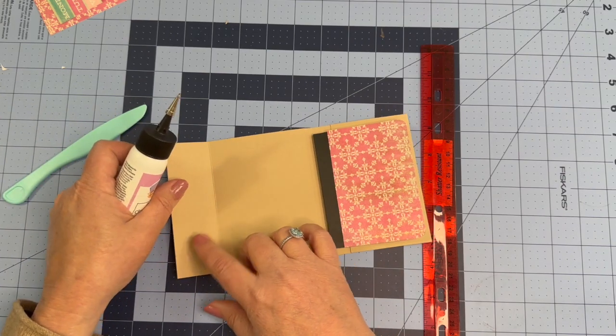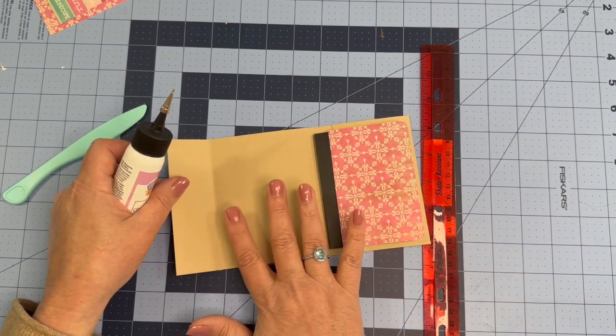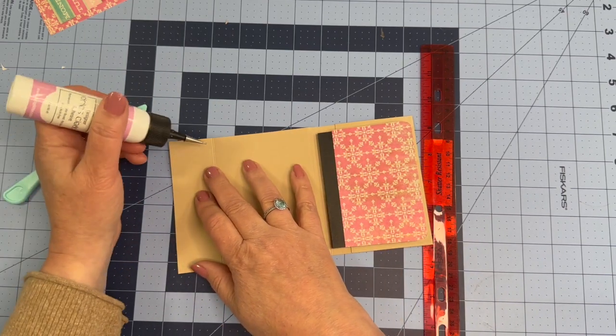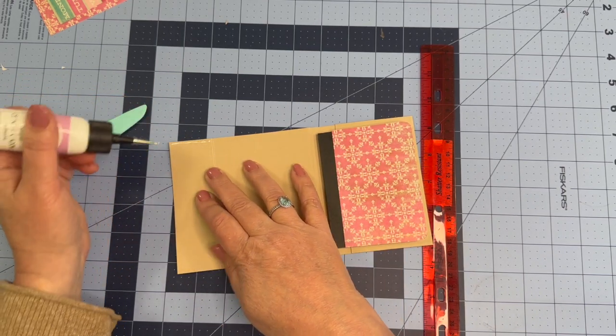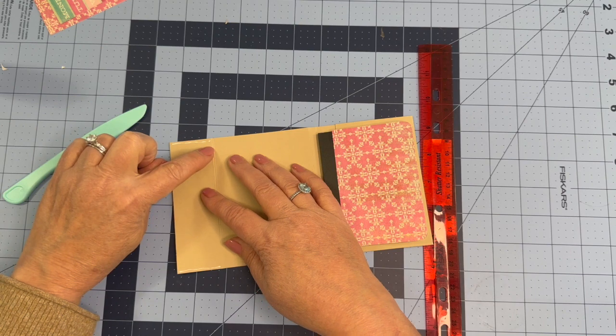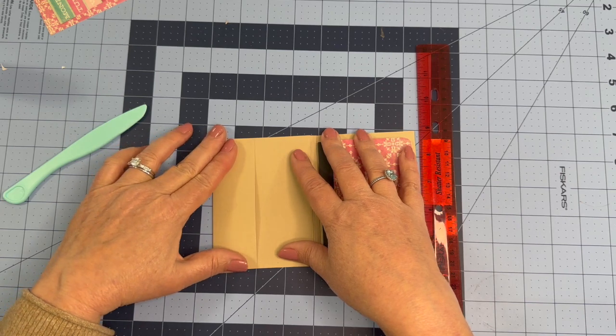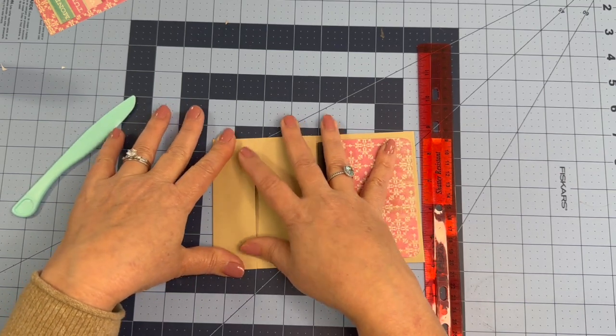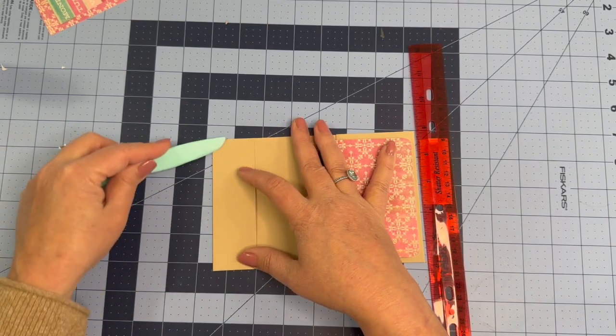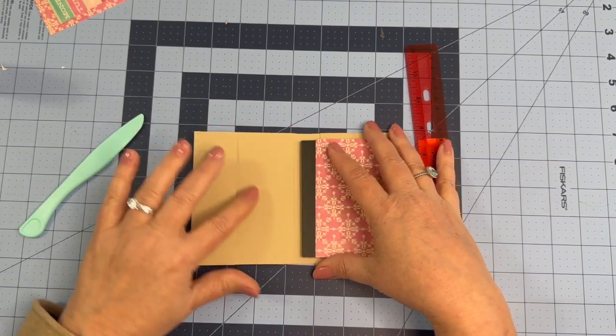Now, if you don't want this pocket, take an inch and a half off of your full length, and that would make it 10 inches by four and three quarters if you don't want the pocket. But I wanted the pocket, so I'm going to just glue up from the fold line up to the edge on both sides, and then I'm just going to fold it over and pinch it down. So now we have a little pocket.